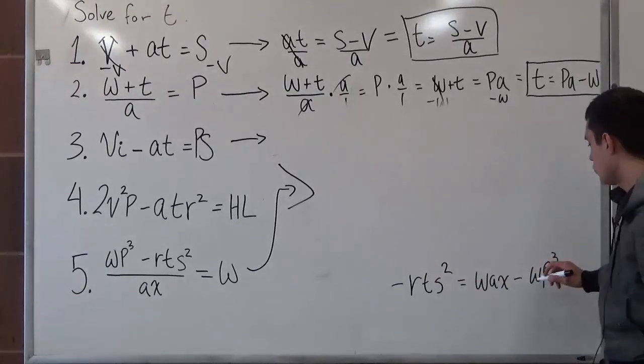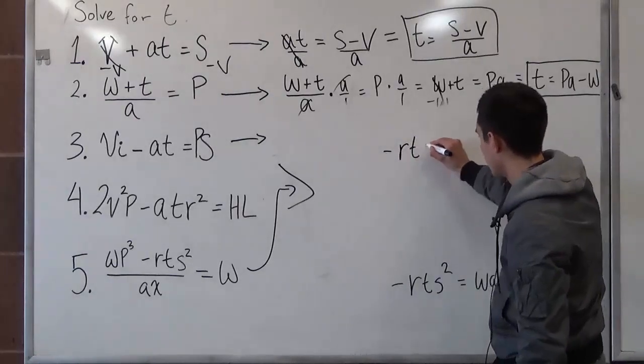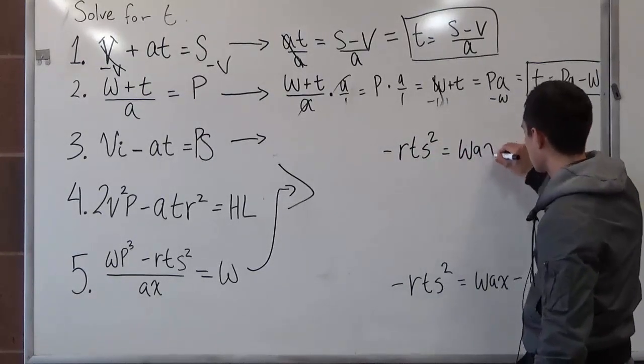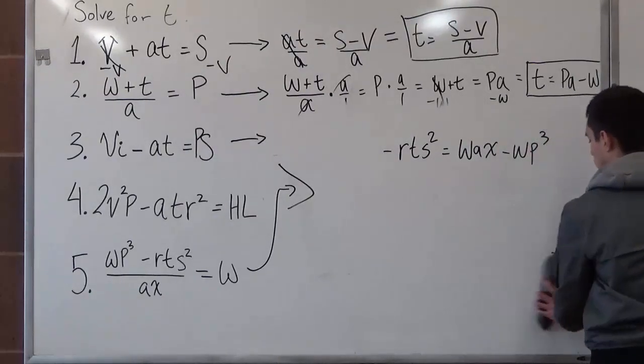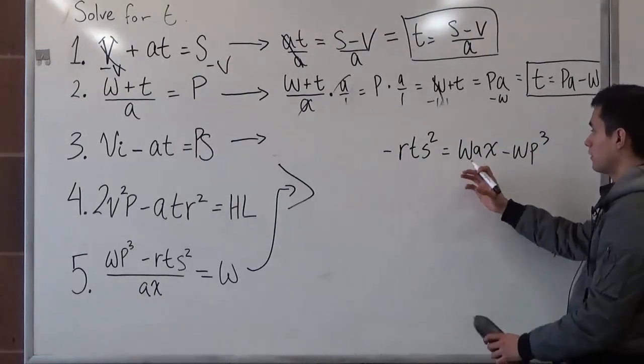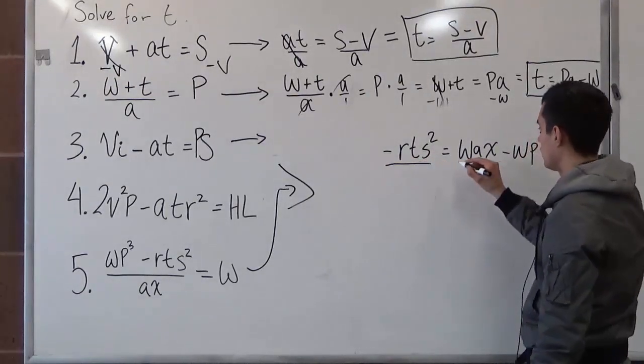So if we just move this up, minus rts squared is equal to wax minus wp to the third. From this step, that's it. All we have to do is apply it again. The same thing.